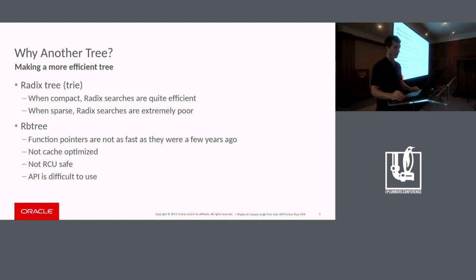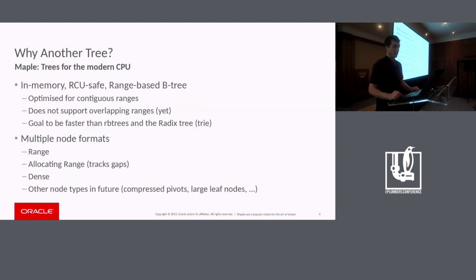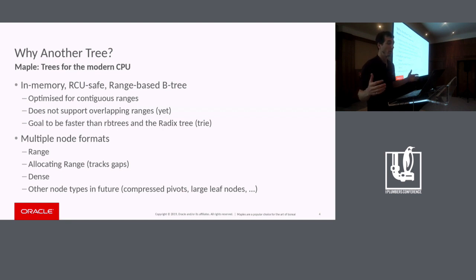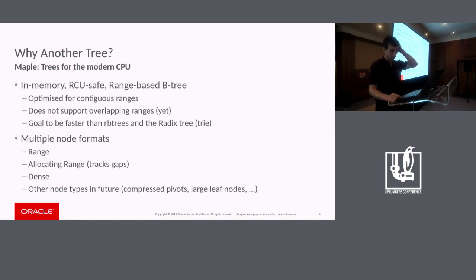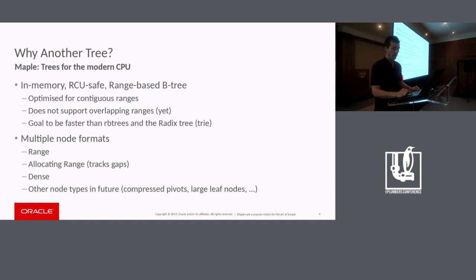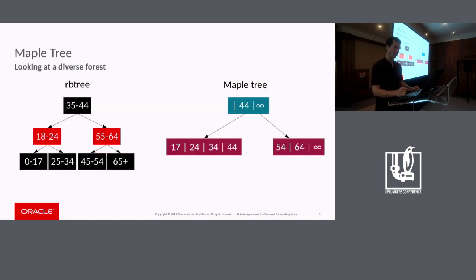The rbtree also has lock contention issues. The maple tree is a bit different from the traditional B-tree. B-trees were used for disk data structures with really large nodes. We use really small nodes because the linear searches are quick and cheap, and allocating and copying the nodes is also cheap — which is really good because to be RCU safe, you actually have to allocate a lot of nodes. The node size right now is 128 bytes — two cache lines — but we're looking at maybe going to three. We'll see how benchmarking looks.